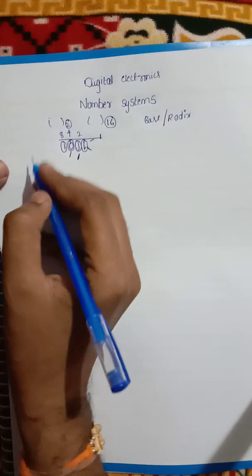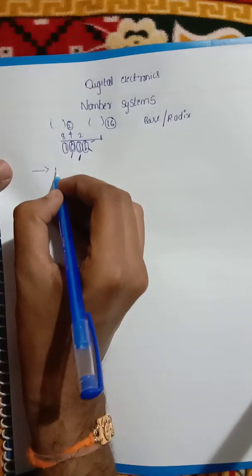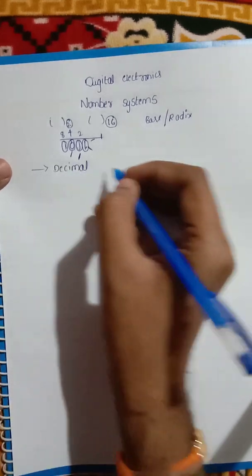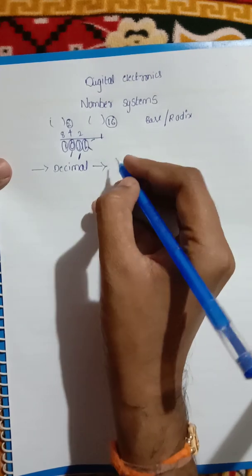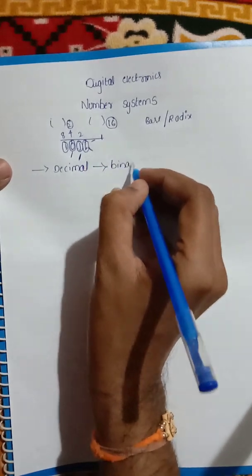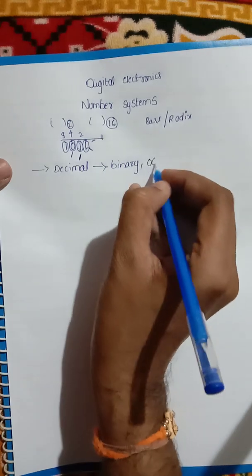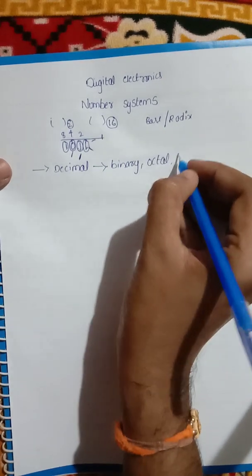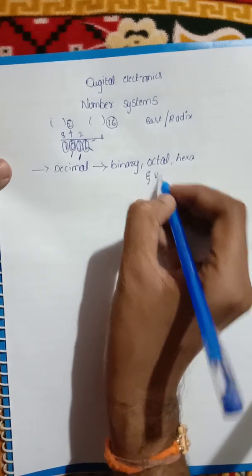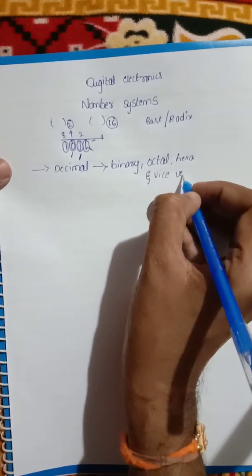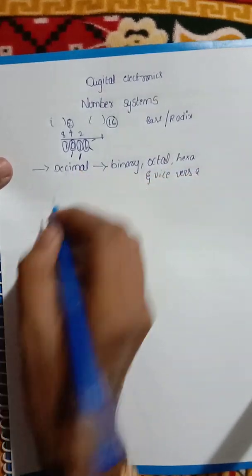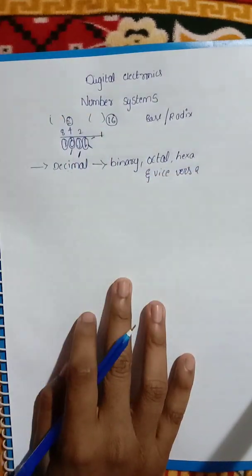In this video, I am going to talk about conversions. First, decimal to all other conversions — decimal to binary, decimal to octal, decimal to hexadecimal — and vice versa: hexadecimal to decimal, octal to decimal, and binary to decimal. I will give you two simple tricks.